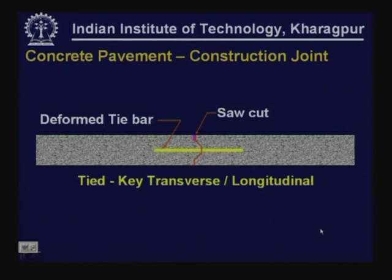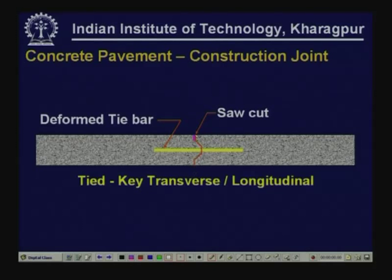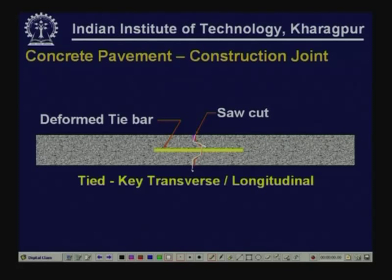We can have another type of construction joint: instead of making a butt joint we can make a key joint, where there is a key arrangement. This will also be complemented by insertion of deformed tie bars if it is a longitudinal joint. For a transverse joint you can also have dowel bars placed across these two slabs, but since you are providing a key, normally you may not require dowel bars because through this key load transfer can be ensured.